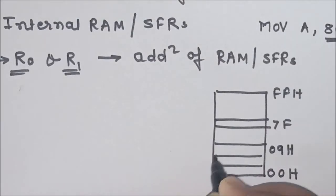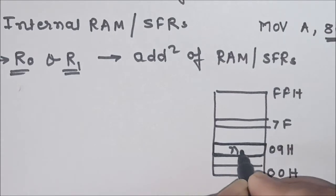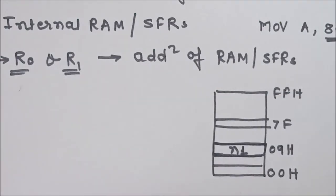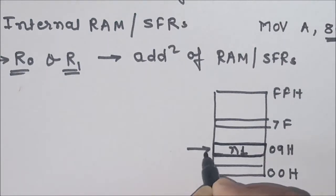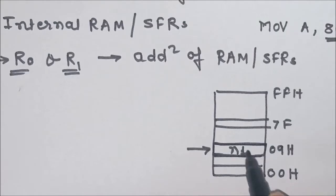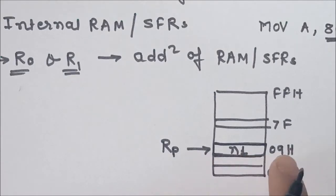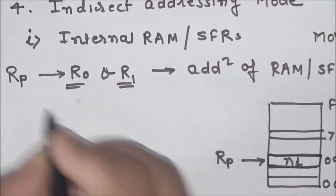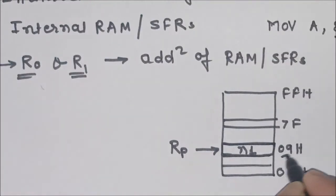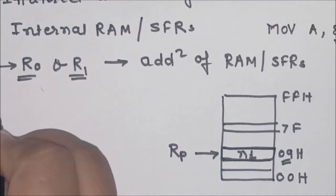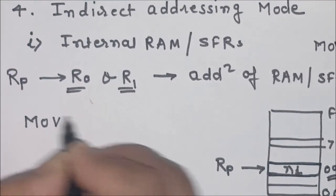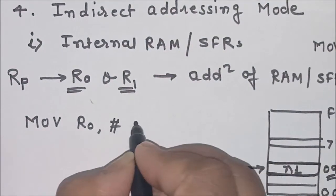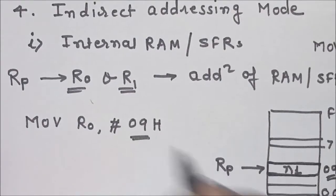Suppose the address of a memory location is 09H and some data N1 is stored there, and we want to read this data from memory and store it in accumulator. We have to use register R0 or R1 as a pointer to this memory location, and the address of memory should be stored in this register. For example, I want to use R0 as a pointer, so I will write the instruction: MOV R0, #09H.